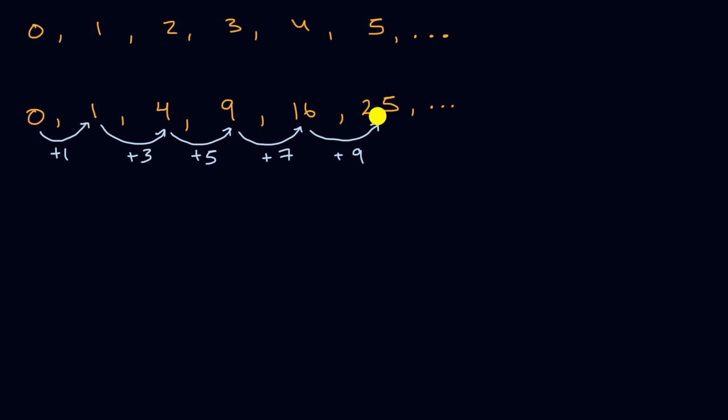And you could test that out. Well, if I add 11, which would be the next odd number, what do I get to? I get to 36, which is the square of six. But how can we feel good that this always is true, that this never breaks down? Well, one way to do it is to think a little bit more generally, and that's where our algebra and our knowledge of polynomials are going to be useful.